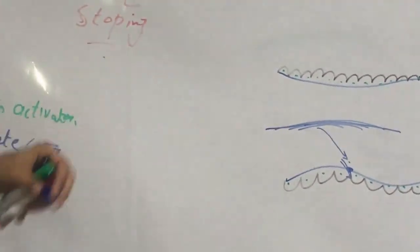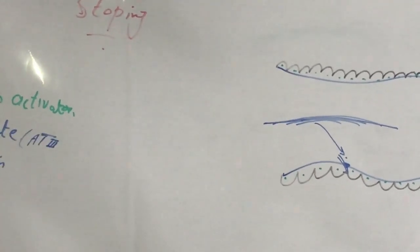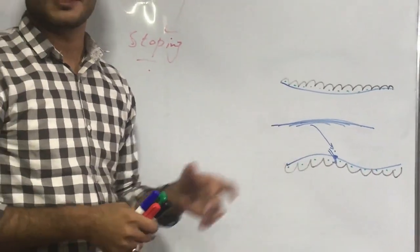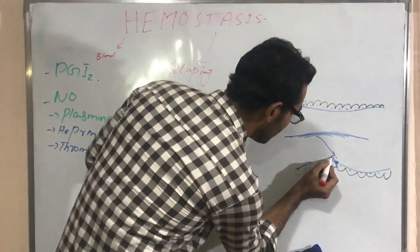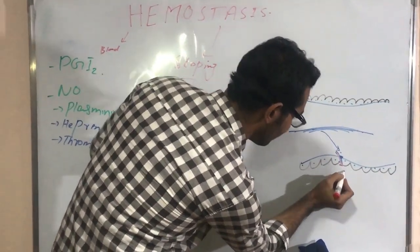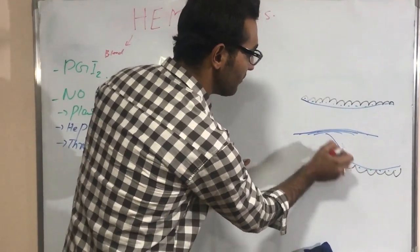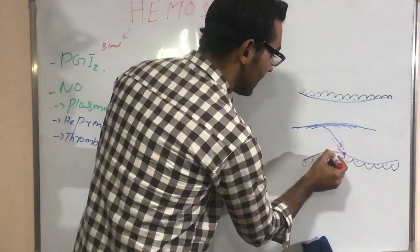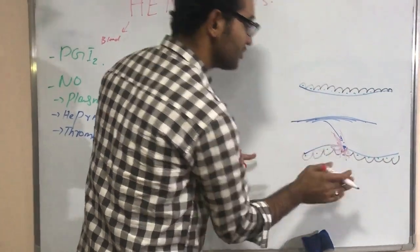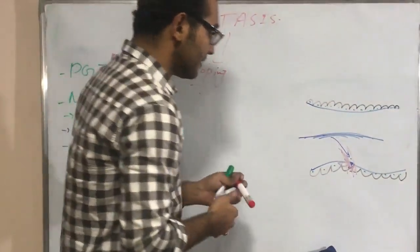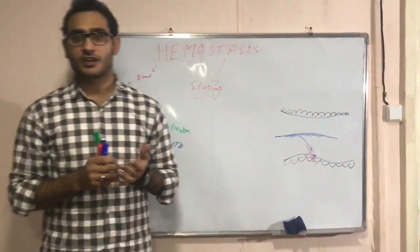When injury occurs, blood will come outside from the vessel. However, the first step in hemostasis is vasoconstriction. Vasoconstriction reduces blood escaping from the vessel — if vasoconstriction does not occur, maximum blood will come out, but if it does occur, the vessel reduces the blood flowing out.